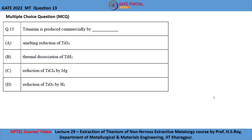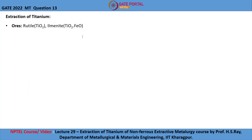Let me briefly explain the extraction processes for titanium. The most common ores used for extraction of titanium are rutile and ilmenite, where ilmenite contains a significant amount of iron oxide in it.